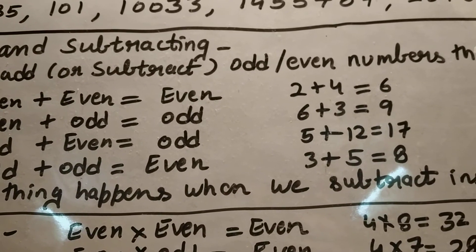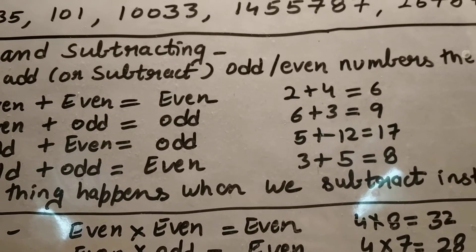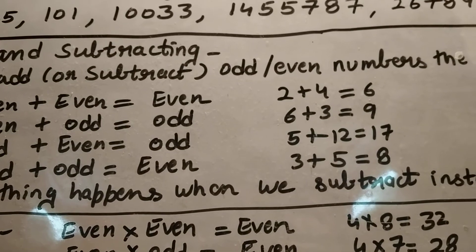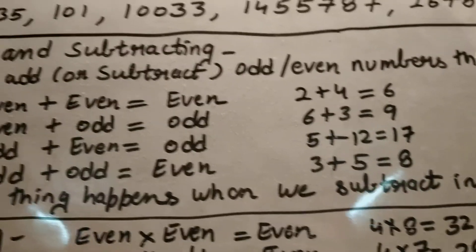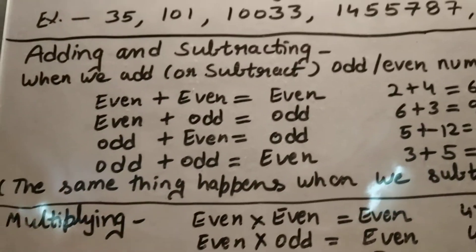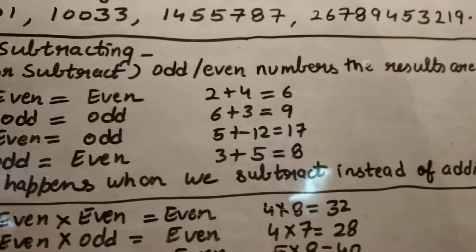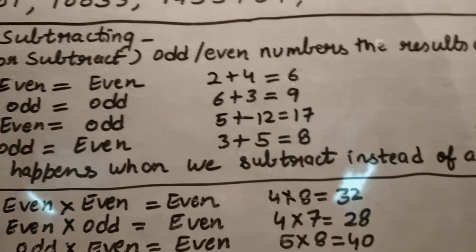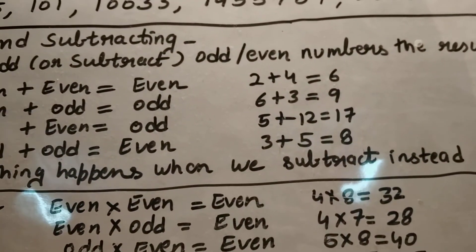Three and five are both odd numbers, and when you add them you get an even number as the answer. The same rules apply when we subtract instead of adding.